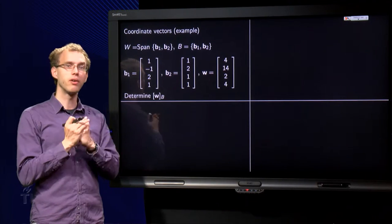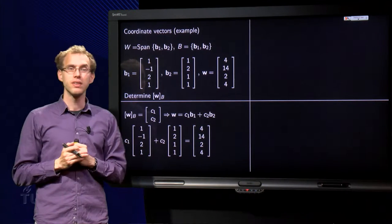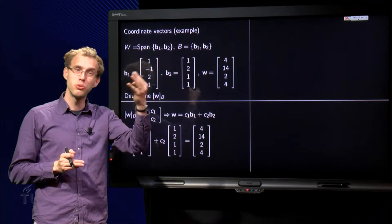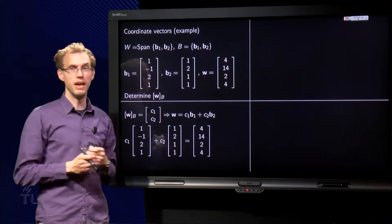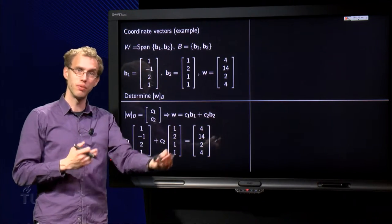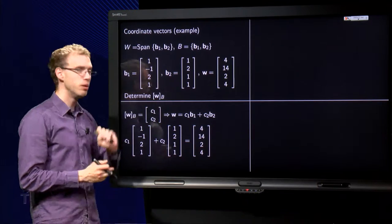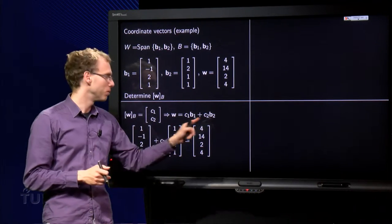So how can we find this vector? Well, we know that this coordinate vector consists of two scalars, c1 and c2, because the basis B consists of two vectors. So I have two numbers here—I want to find the weights c1 and c2 such that w equals c1 times b1 plus c2 times b2.